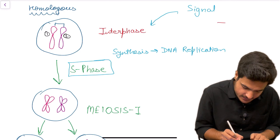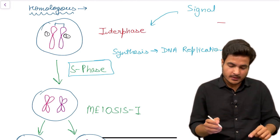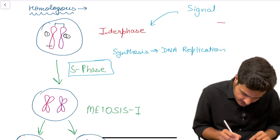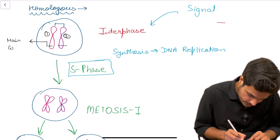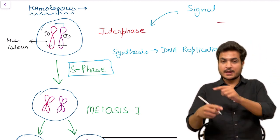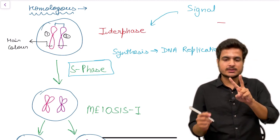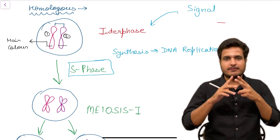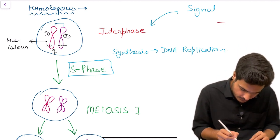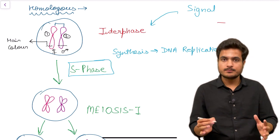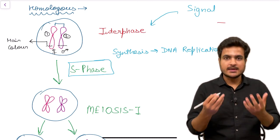What do we mean by homologous chromosomes? Homologous chromosomes are equal in size and have alleles of the same gene present at the same location. For example, a gene coding for hair color would be present on the long arm of both chromosomes at the same location. In a homologous pair, one chromosome comes from the mother and the other from the father. After the cell enters S phase, DNA replication occurs.